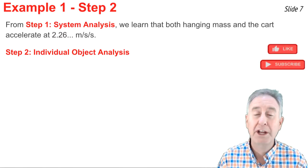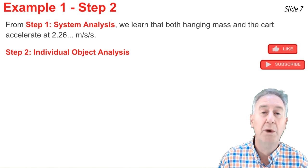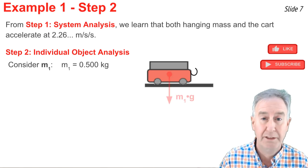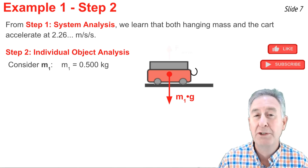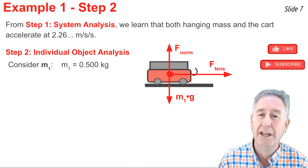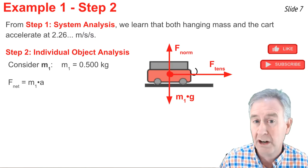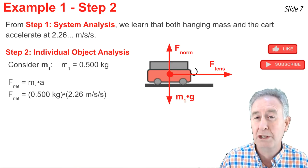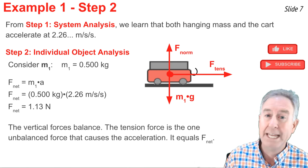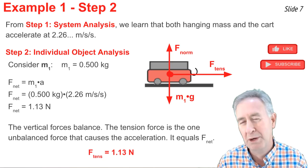A system analysis determines the acceleration of the two objects, but an individual object analysis is required to find the tension. I pick the cart, mass 0.50 kg, and draw its forces: gravity M1G down, normal force up balancing it, and the string tension pulling the cart to the right. Using F_net = ma: 0.50 × 2.26 = 1.13 N net force. Since the vertical forces balance, the tension is the only unbalanced force. Therefore, the tension is 1.13 N.